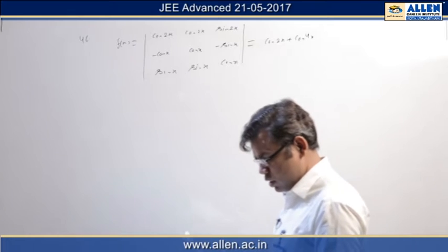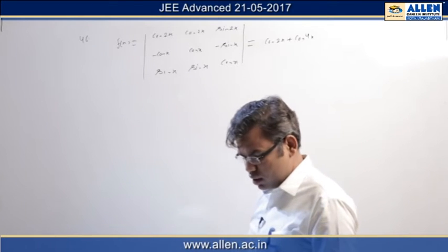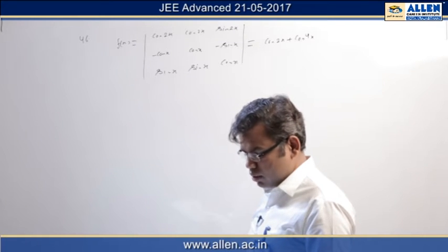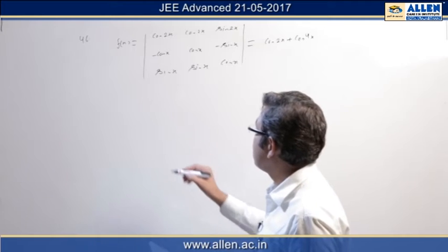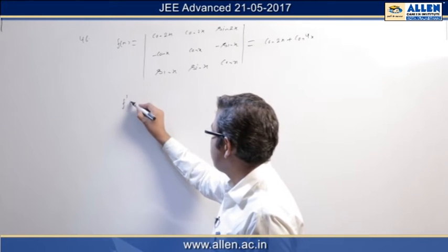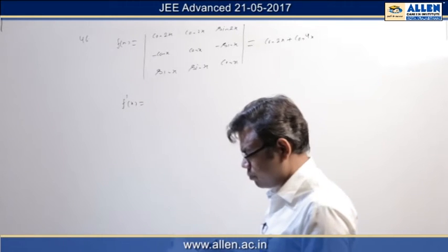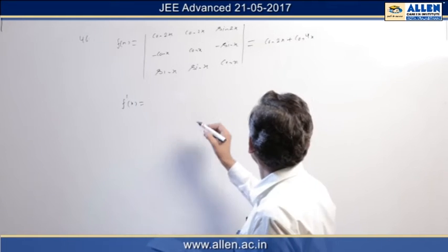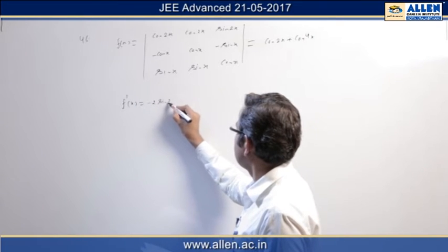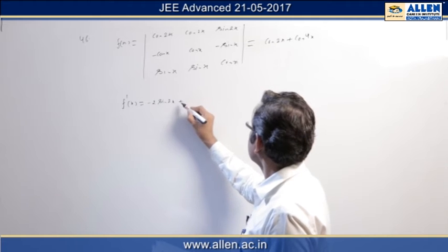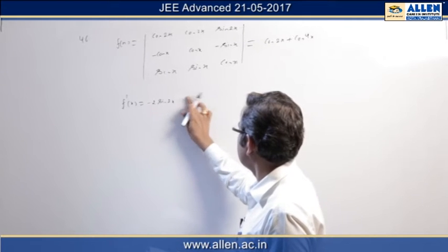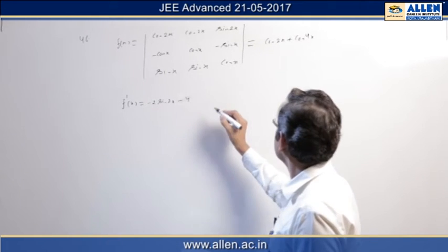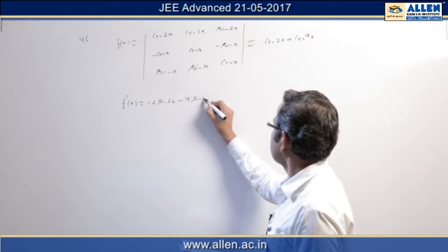Now in the problem there are four options. In each option they're asking maxima, minima, and zeros of derivatives. So we will go for f'(x). f'(x) is we are getting minus 2 sin 2x minus 4 sin 4x.